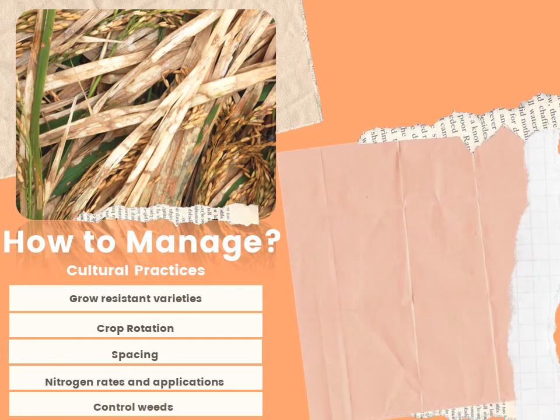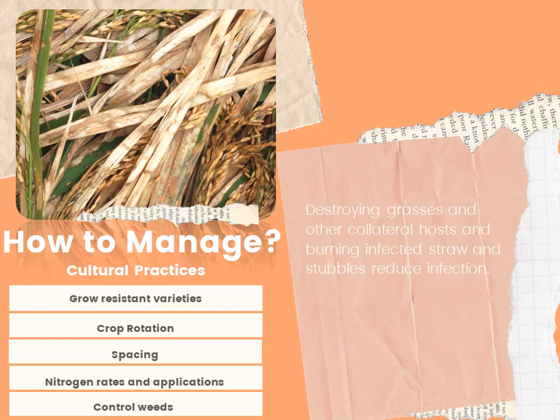Lastly, controlling weeds by destroying grasses and other collateral hosts and burning infected straw and stubble can also reduce infection. Introduction of minimum tillage, which merely stirs the soil rather than inverting it, improves conditions for sclerotia survival; drain fields as soon as possible to reduce conditions that favor high humidity and more severe disease.